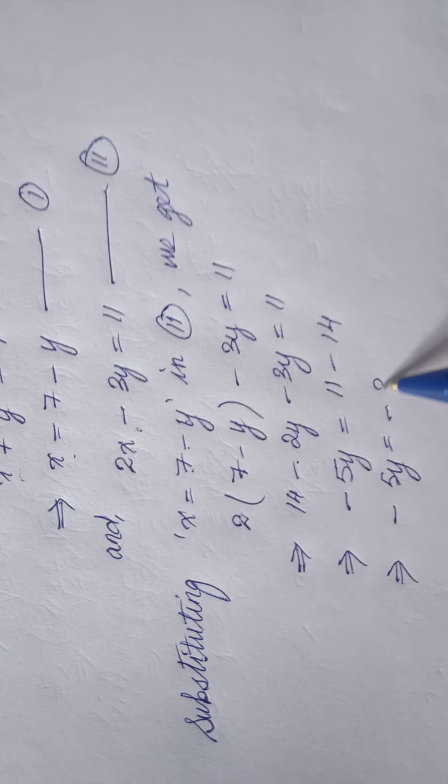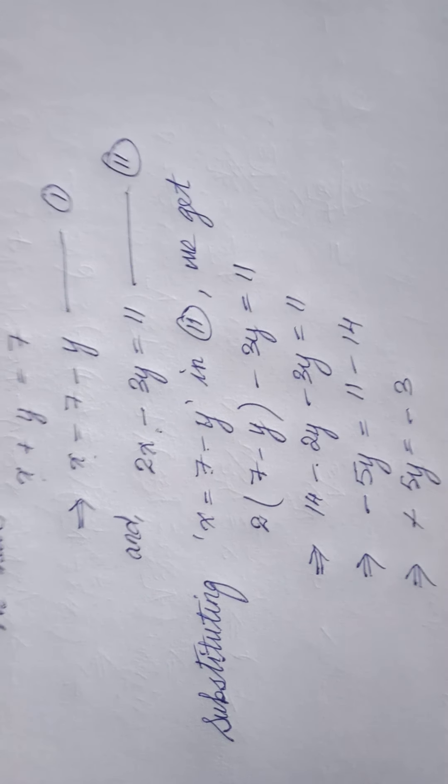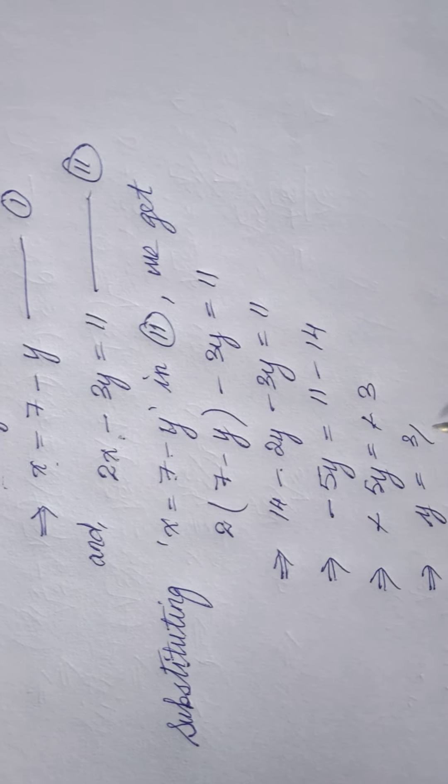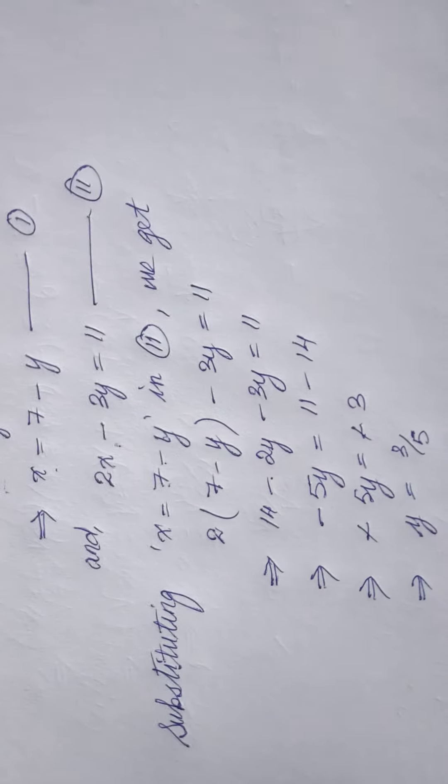11 minus 14 is minus 3. Negative and negative cancel each other so the value of y is 3 by 5. So we have the value of y.